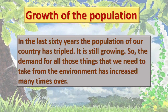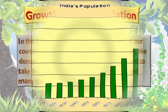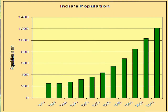Now we will go through the graph and study the population explosion. This is a bar graph — you can see the bars here. This is the x-axis and this is the y-axis. On the x-axis, we can see the years, that is, 1911 to 2011.